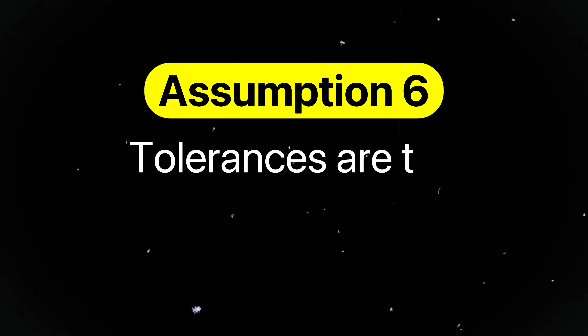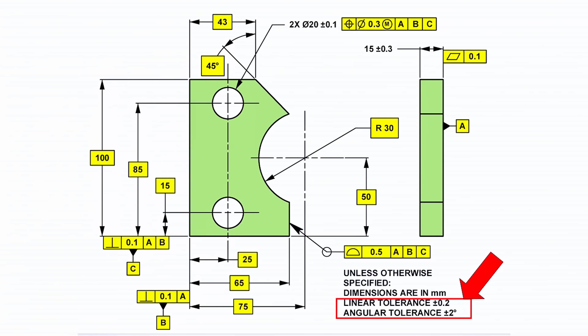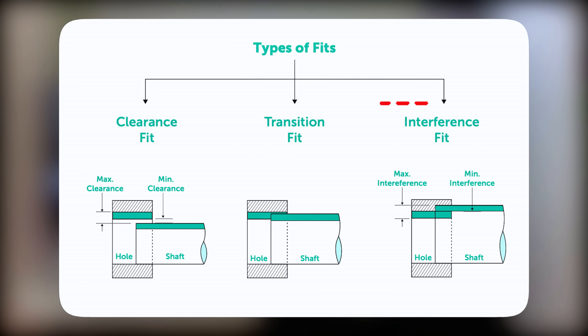Assumption number six is tolerances are the manufacturer's problem. If you don't define tolerances as a mechanical engineer, you're offloading key design decisions to the manufacturer. For example, if a shaft and hole require a slip fit and you don't define the tolerances on a drawing, the vendor might use default tolerance values resulting in a tight fit or even interference. That leads to assembly issues and rework. Always take responsibility for critical dimensions and document your intent clearly. Communicate critical-to-function features and indicate where looser tolerances are acceptable.